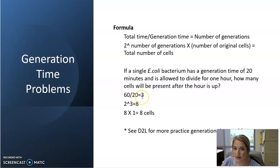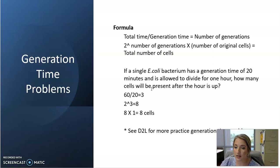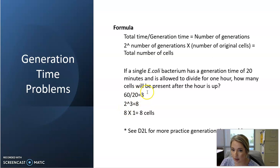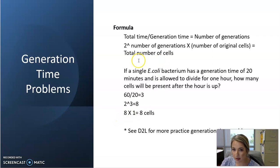We want to know how many cells will actually be present after three cycles. So we take two raised to the power of three — the two always stays, but this exponent changes based on our result. Two to the third power is eight. We're not done yet: we multiply eight by the number of original cells, which was one. Our final answer is eight cells.